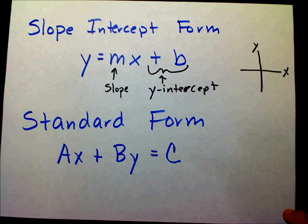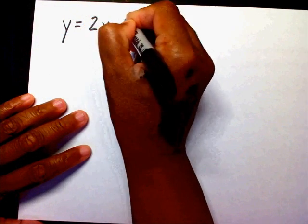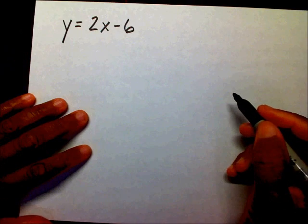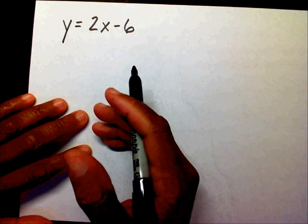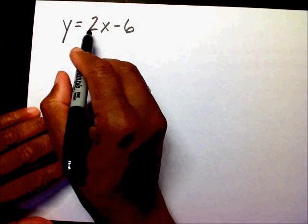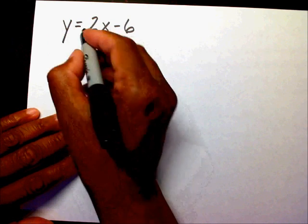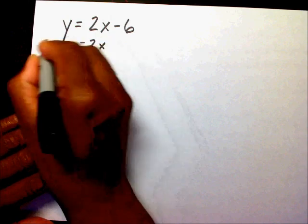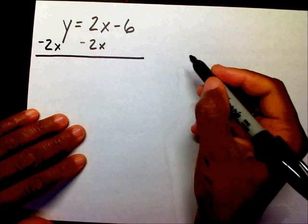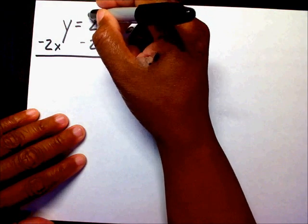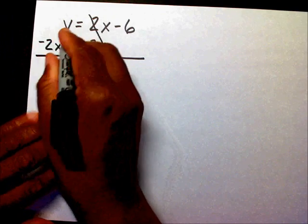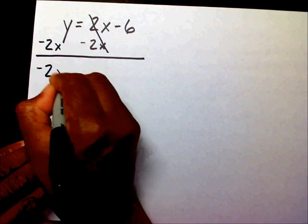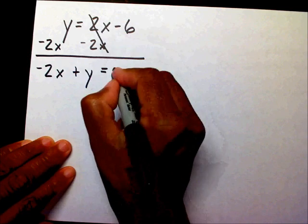So let's get started. If I want to change slope intercept form — say y equals 2x minus 6 — into standard form, I want to get the x and the y on the same side. So I need to subtract 2x on both sides. The 2x's cancel, leaving me with negative 2x plus y equals negative 6.